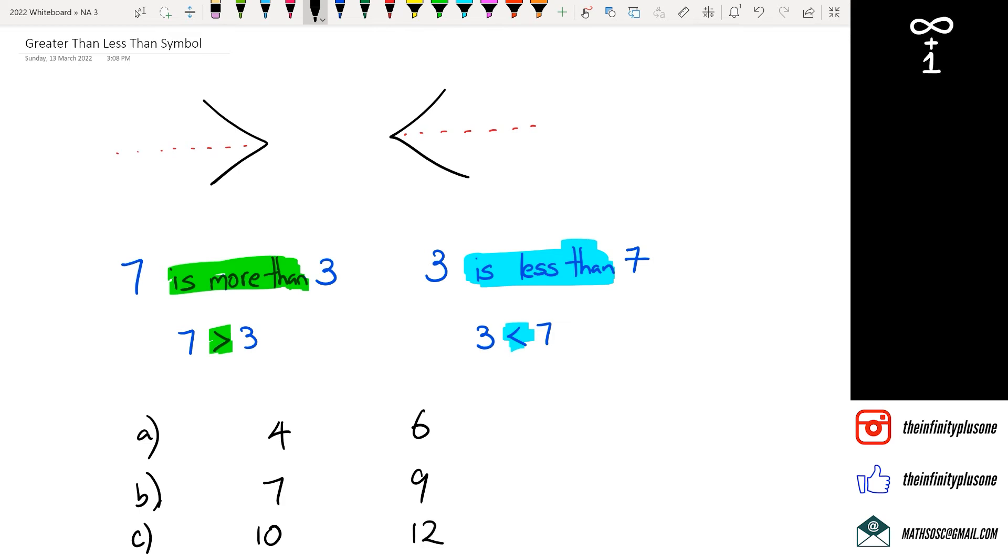7 and 9, and then we'll go 10 and 12. So if you look at it like this, we can say that 4 is less than 6, and because it's less than 6, that's the less than symbol. And then here 7 is greater than 9. No, 7 is not greater than 9. Sorry, I was looking at something else. 7 is less than 9. So we're going to put this there. And 10 is less than 12.